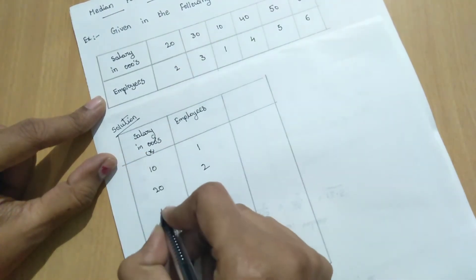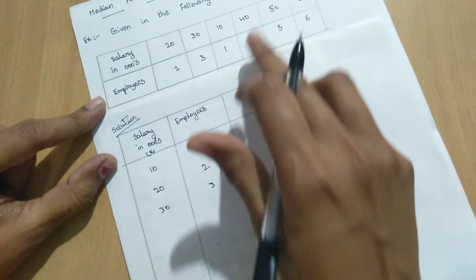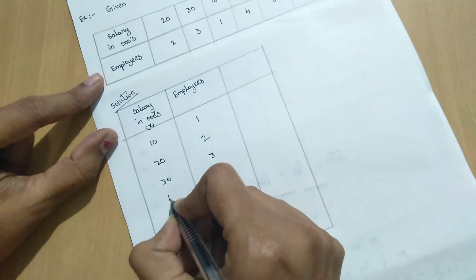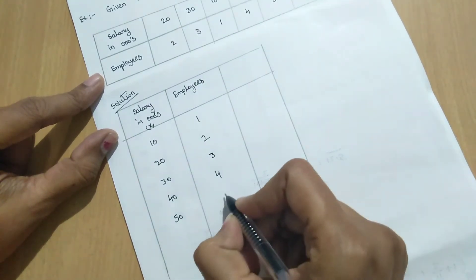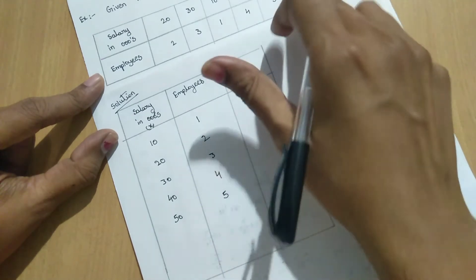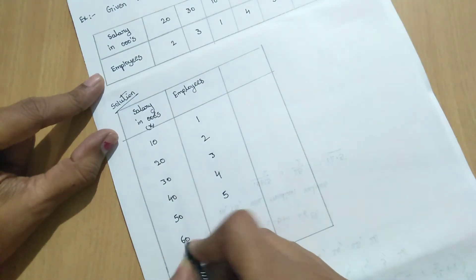Next 30,000. 3. Next 40,000. 4. Next 50,000. 5. Next 60,000. 6.